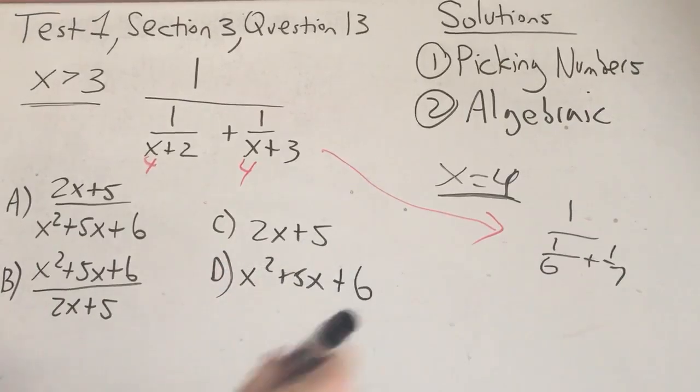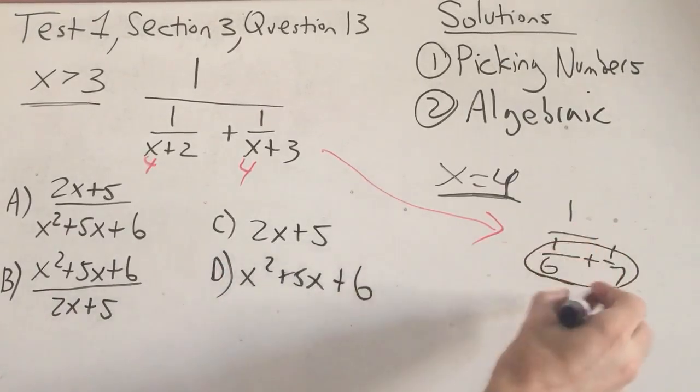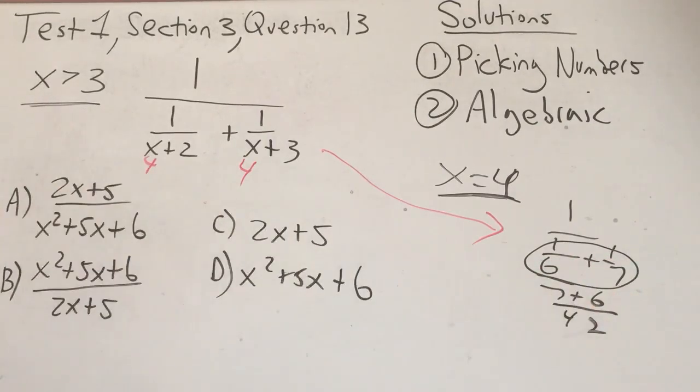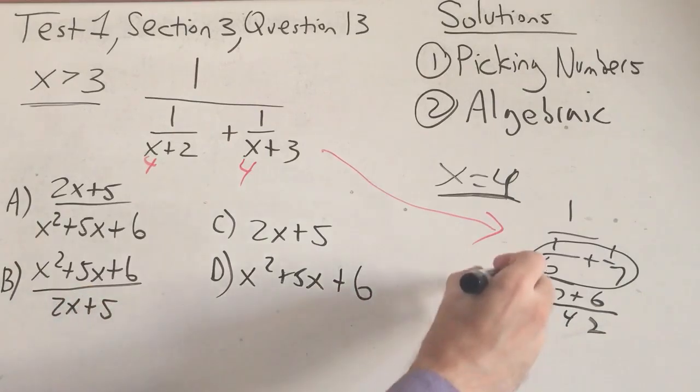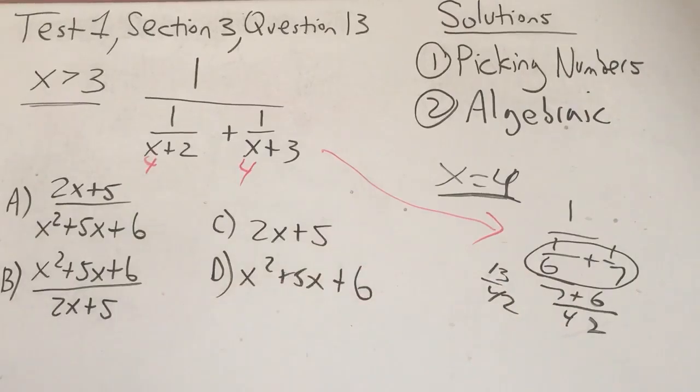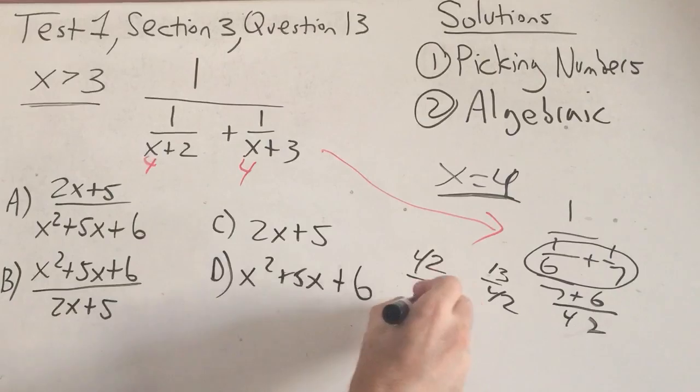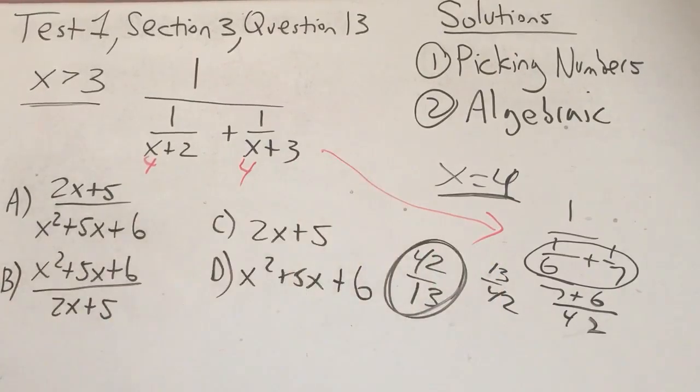Now 1/6 plus 1/7 is 7+6 over 6 times 7, which is 42, or 13 over 42. And we're taking 1 over that, so we need to flip it to get 42 over 13. Put a nice big dark circle around there, so when we compare, we know exactly what we're looking at.